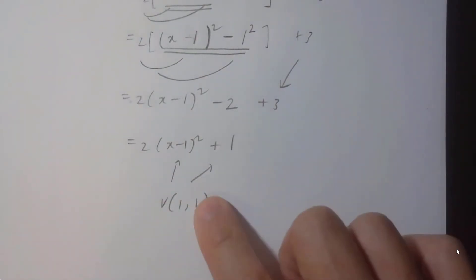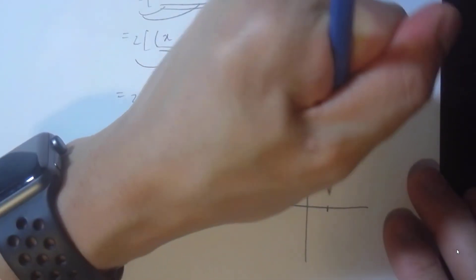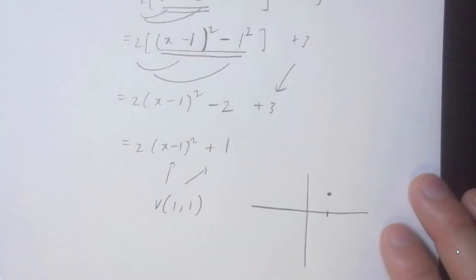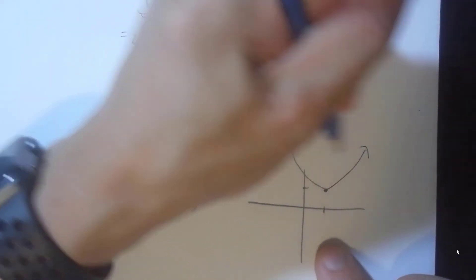And the y value just copies down here. So as you can see, the vertex 1, 1 is 1 unit to the right and up. And it opens like a happy face.